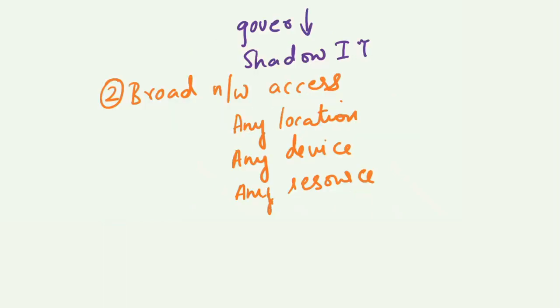The next key feature that we will talk about is broad network access. The slogan of this characteristic is: access what you want when you need from any location, from any device, over the internet. This offers the always-on or always-accessible feature.